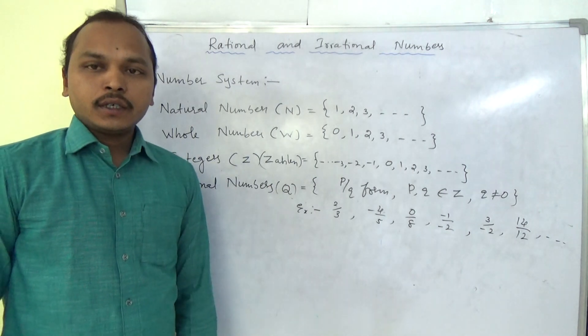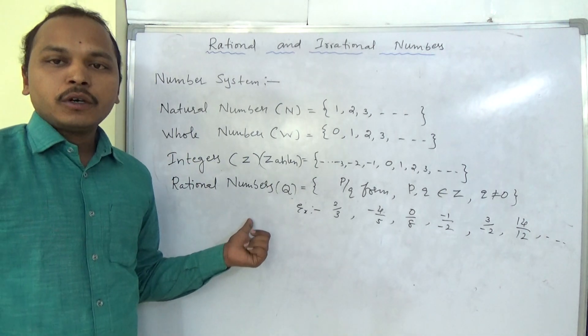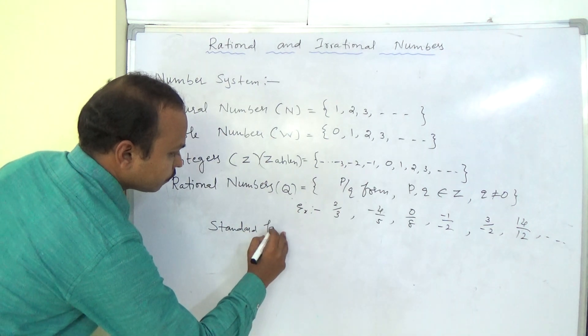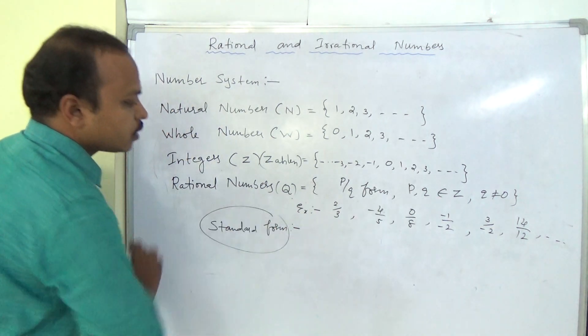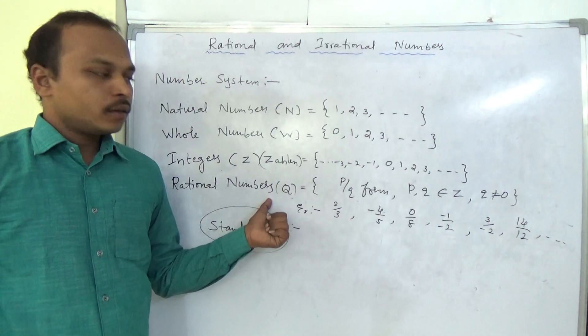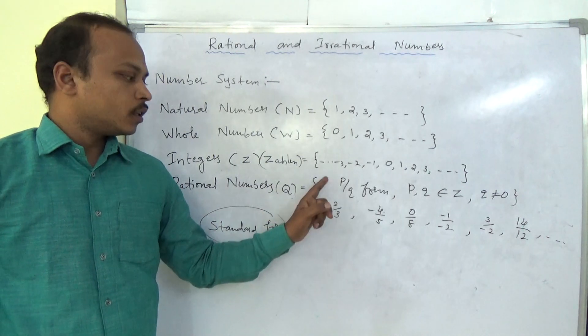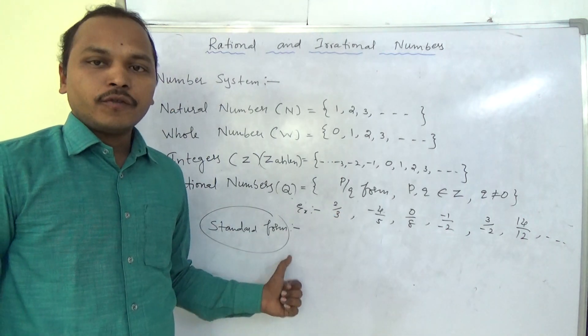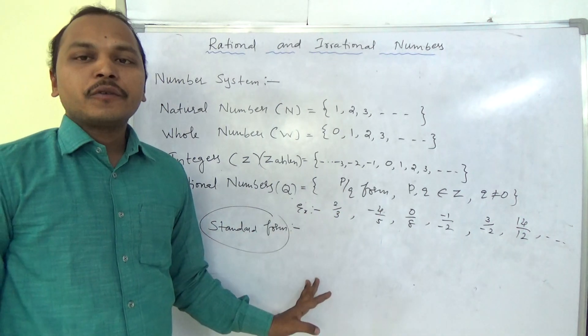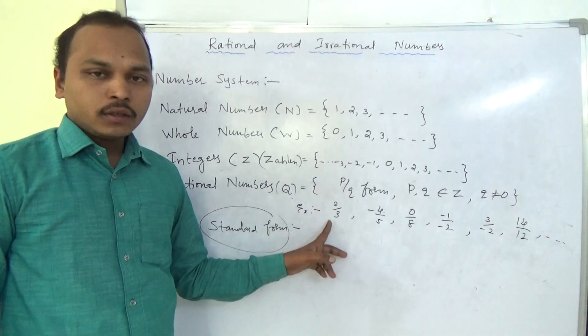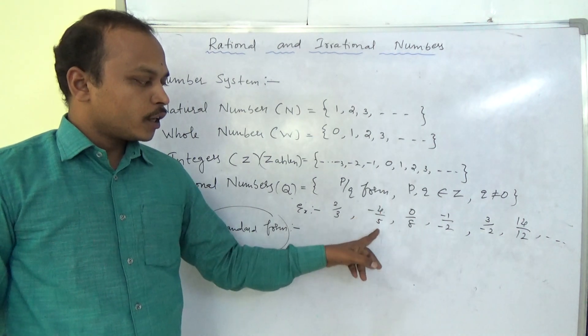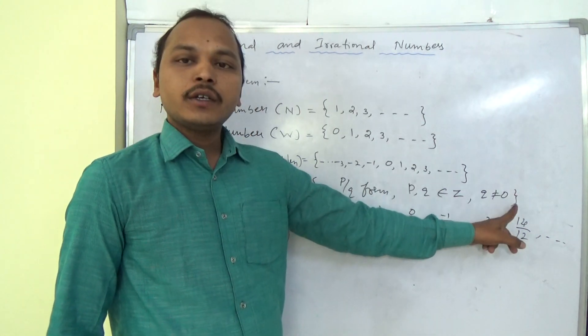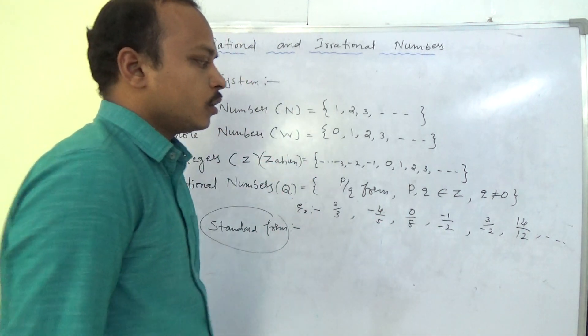In this rational number, one important thing is standard form of rational number. What is standard form? Standard form of rational number. Any rational number we can write in the form of p by q. We should write in the form of p by q, but the condition is p and q, there is no common factors except 1. For p and q, no common factors except 1. Here you see 2, 3. For 2 and 3, no common factors except 1. 4 and 5, 0, 8. But here 14 and 12.